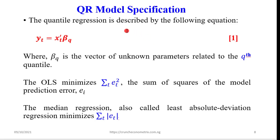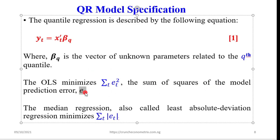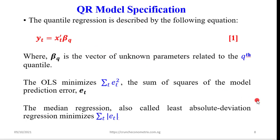Now let's move on to model specification. On the screen, we have the quantile regression described by equation 1, where BQ is a vector of the unknown parameters related to the Q-th quantile. Recall that OLS minimizes the sum of squares of the model prediction error. In this example, I'm assuming a time series data, which is why you see the subscript T. Yours could be cross-sectional data with subscript I, panel data with subscript IT, or pooled data with subscript IT.